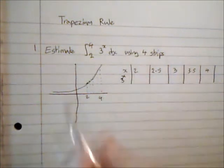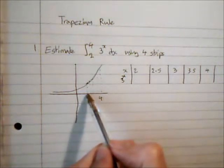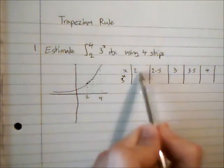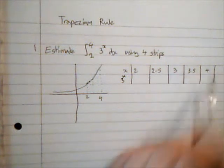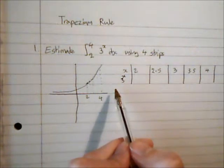In order to calculate the areas of these trapeziums, we're going to need to know the distance between the two parallel lines, which is going to be 0.5 each time, and we need to know the heights of the trapeziums, so that's evaluating 3 to the x.